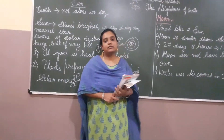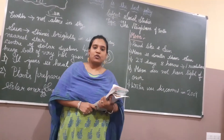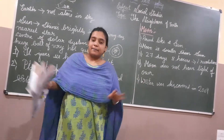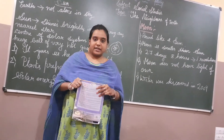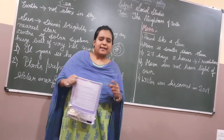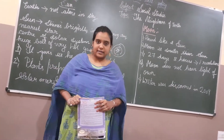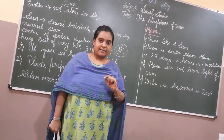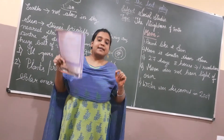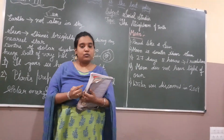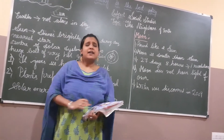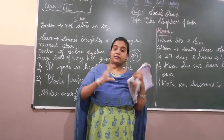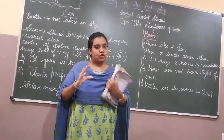The moon is just a neighbor of the earth — it is the closest neighbor. Moon is also round like a ball. When we look at the sky, the sun and moon appear to be the same size, but they are not. The sun is very, very big and the moon is smaller. The sun stays in one place, but the moon moves around the earth.